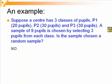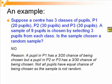The answer is no. That is because a pupil in P1 has a 3 out of 20 chance of being chosen, whereas a pupil in P2 or P3 have a 3 out of 30 chance, which is lower of being chosen. Not all pupils stand an equal chance of being chosen, so the sample selected is not a random one.